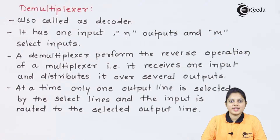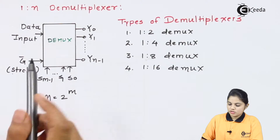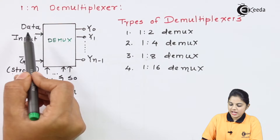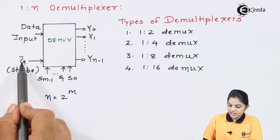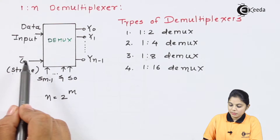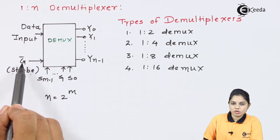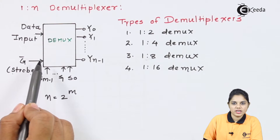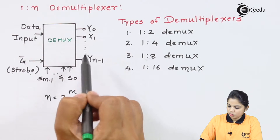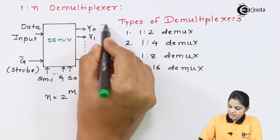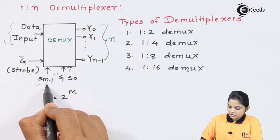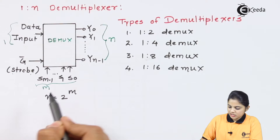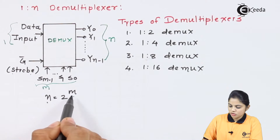Now, how this routing procedure takes place — we will see by using the block diagram of D-multiplexer. So this is the block diagram where we have one data input and one enable line, that is a strobe. Here we have G-bar, which means active low will be considered as active high. So this should always be low so that 0 will be taken as 1 and the D-multiplexer will work. The outputs are N in number, and the select line is denoted by M.